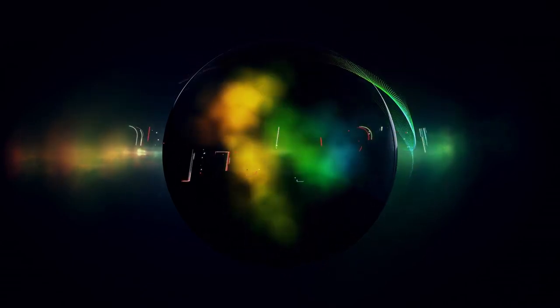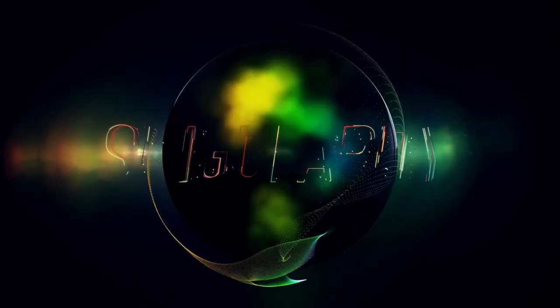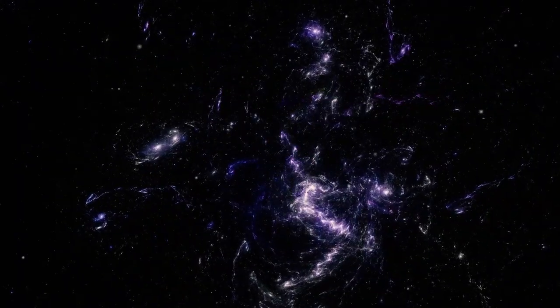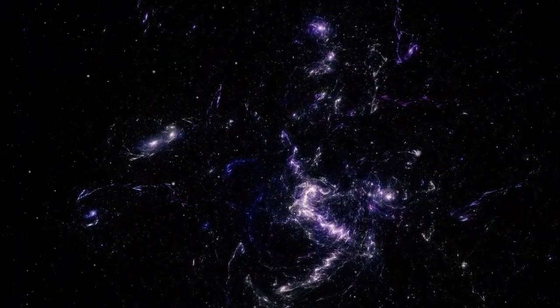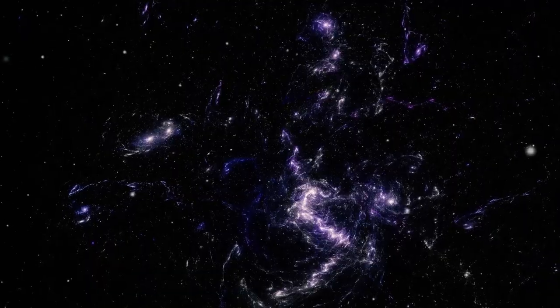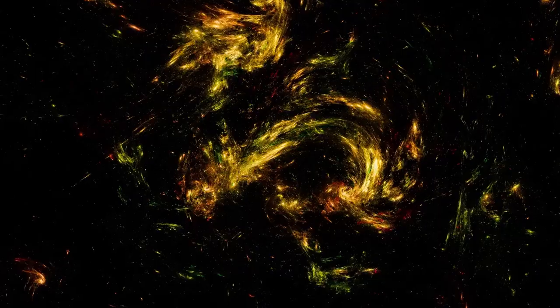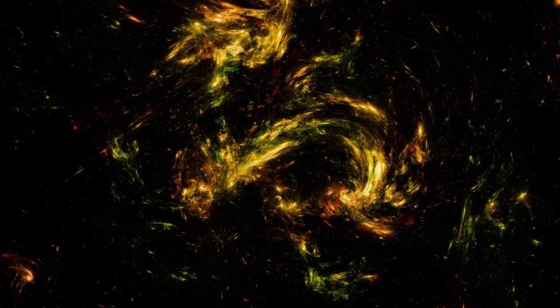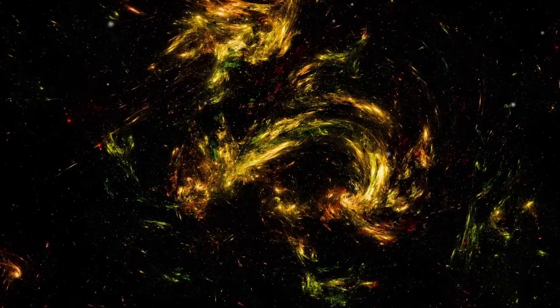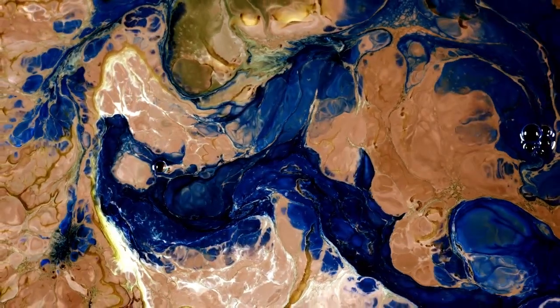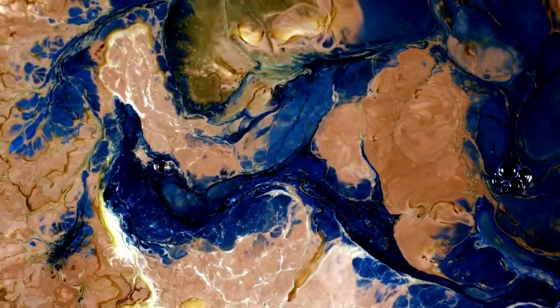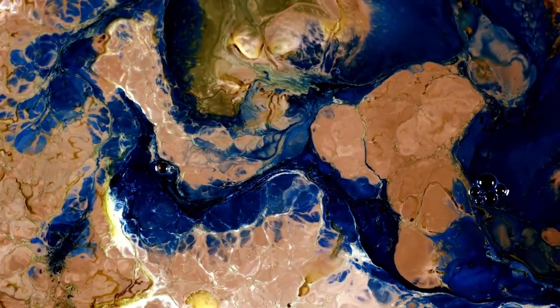For years, we believed life had to depend on the warmth of the Sun. After all, here on Earth, the Sun fuels everything. But what if life could survive without sunlight? What if it could thrive in places so distant and cold that the Sun is just a faint dot in the sky? This idea isn't as far-fetched as it sounds.